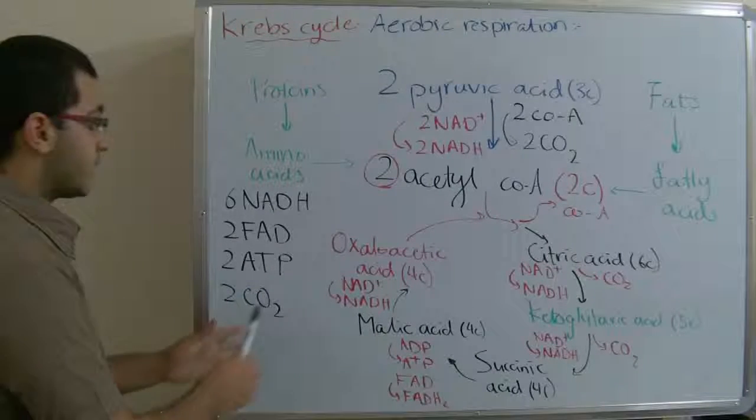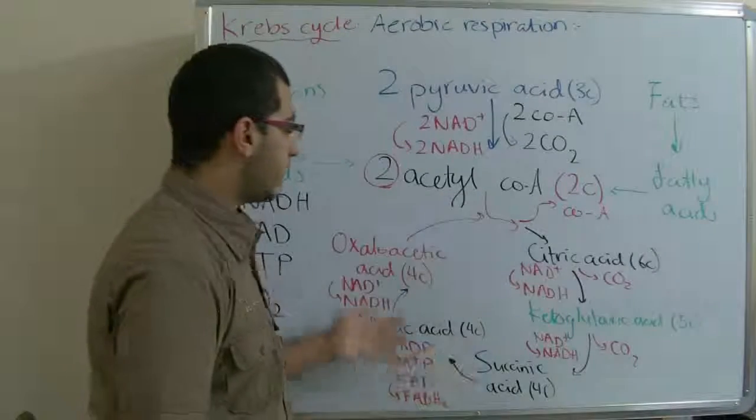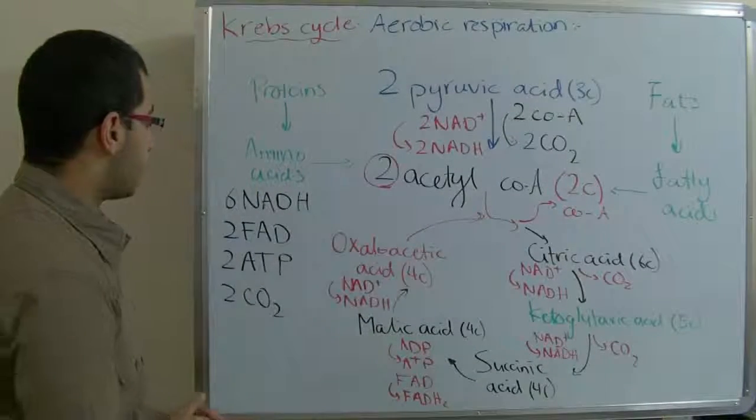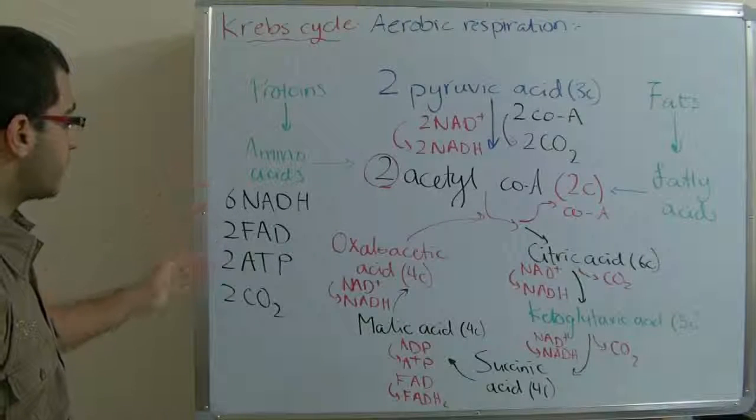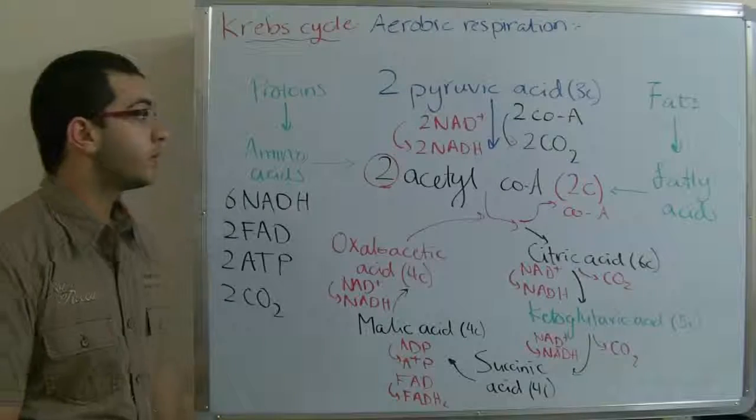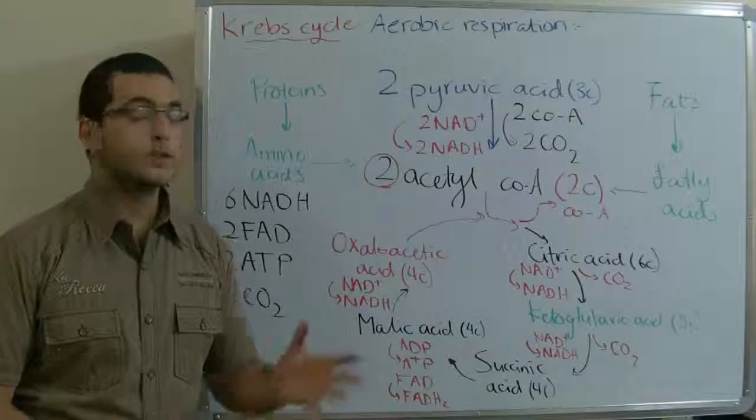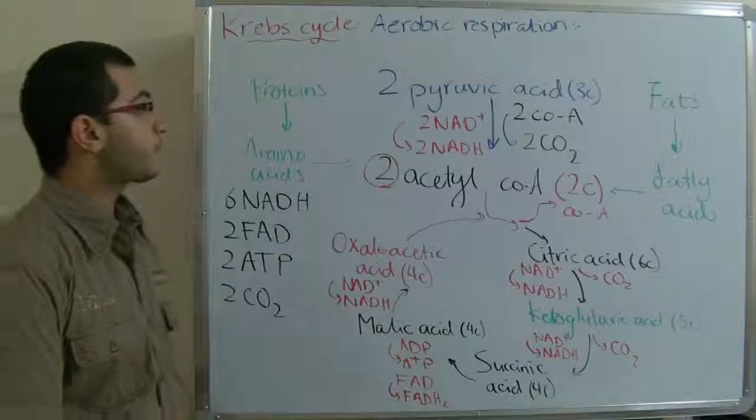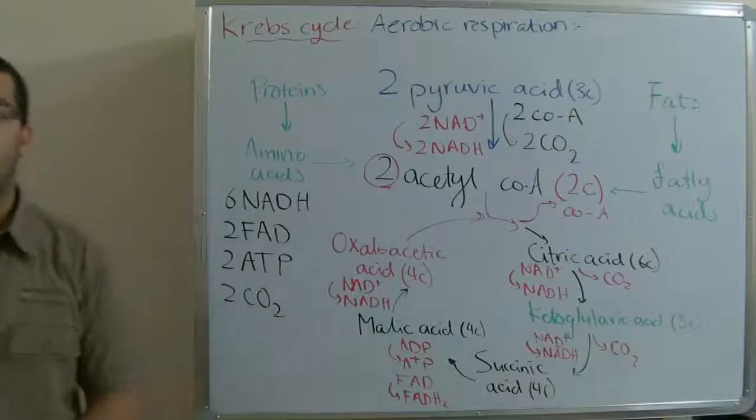After finishing the Krebs cycle, the products, these energy forms, pass through the electron transport chain in order to release this energy. We will know how this happens in the next video. Until then, thank you for watching and see you next time.